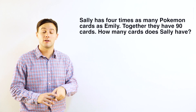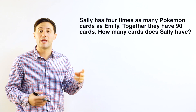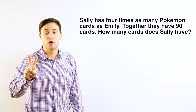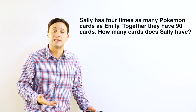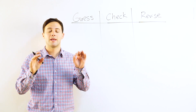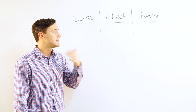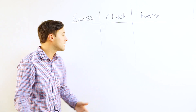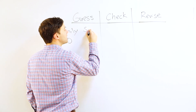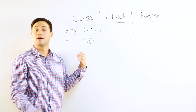Is this a good strategy for using Guess, Check, Revise? Absolutely. There are two conditions we have to meet. One: Sally has four times as many cards as Emily. And two: together they have 90. Guess, Check, Revise is absolutely perfect here. So first, my first guess — I want to make sure it meets one of the conditions. I'm going to start with what's first: Sally has four times as many cards as Emily. Let's say Emily has 10 cards, then Sally has 40 — four times as many. I met the first condition.